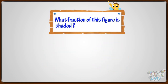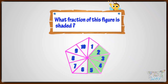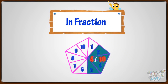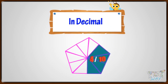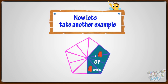What fraction of this figure is shaded? 4 parts out of 10 are shaded. So in fractions, we will represent it as 4 by 10. And in decimals, we can write it as 0.4, or 4 tenths.